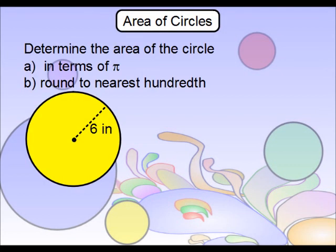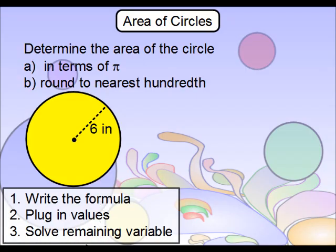So how about we do an example? Let's determine the area of this particular circle here, and let's do both ways. Let's do in terms of pi, which means we want an exact answer, and let's round off to the nearest hundredth. These are the steps that we're going to use to help figure out these problems. The first thing that we're going to do is we're going to write out the formula.